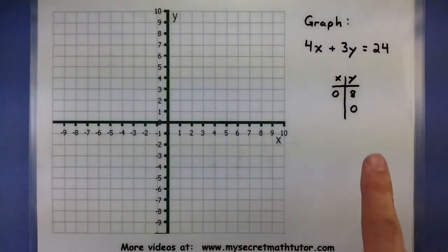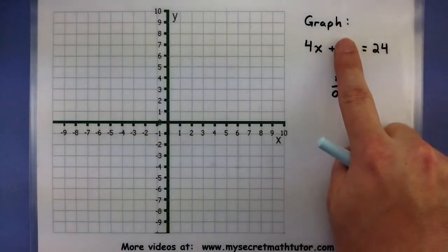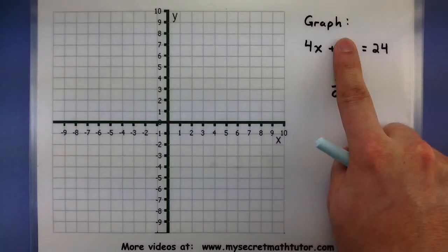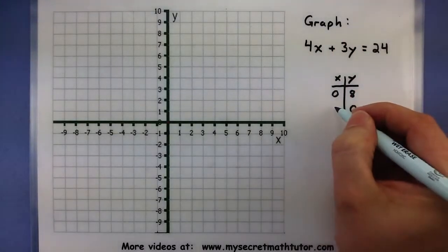Now we'll do the same thing for the y. So plug in a 0 for y, that term is gone. And now what does x have to be? Well, 4 times 6 is the only thing that will give me a 24, so I will say that x is equal to 6.